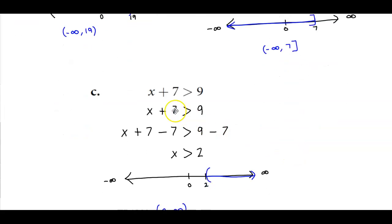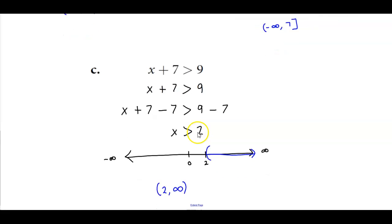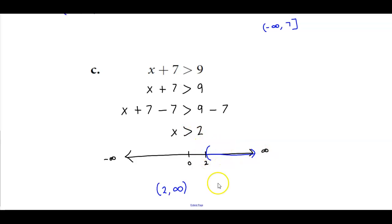For part c, we have x plus 7, which is greater than 9. We subtract 7 from both sides, so x is greater than 2. On the number line, we have a parenthesis at 2 because it's not included, going towards positive infinity. This gives us the interval notation of 2 to infinity.